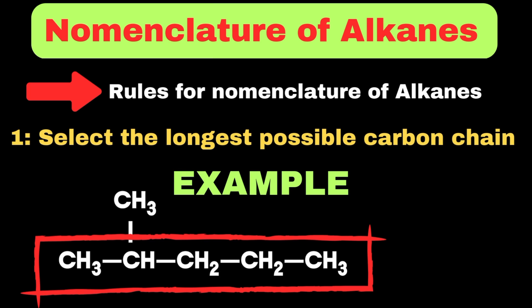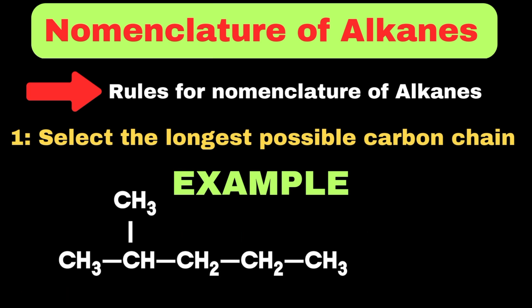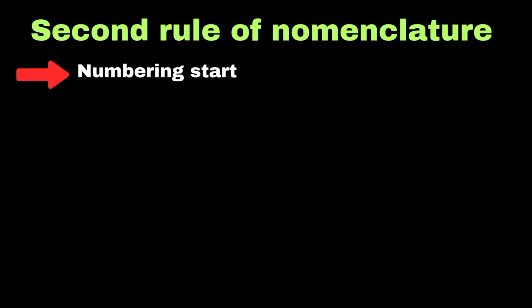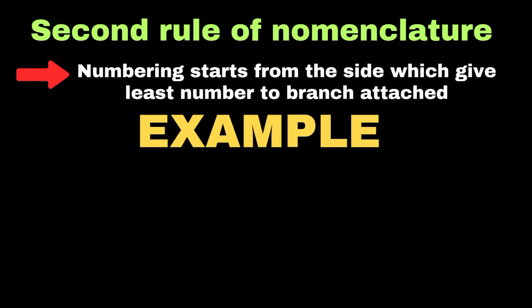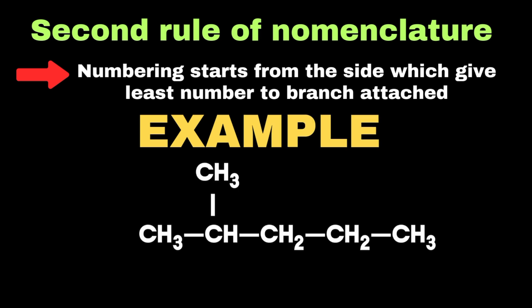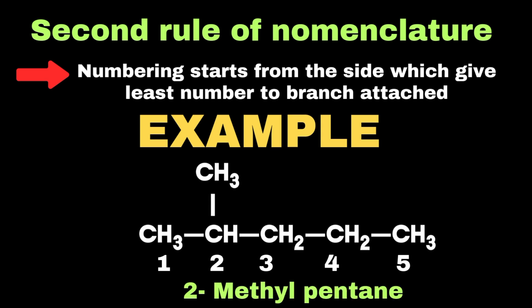The second rule says that if the parent chain has any branch or substituent present on it, then numbering will start from that side which gives the least number to the branch attached. Since the methyl group is present on the second carbon from the left side, we start numbering from left to right, and its name will be 2-methylpentane.